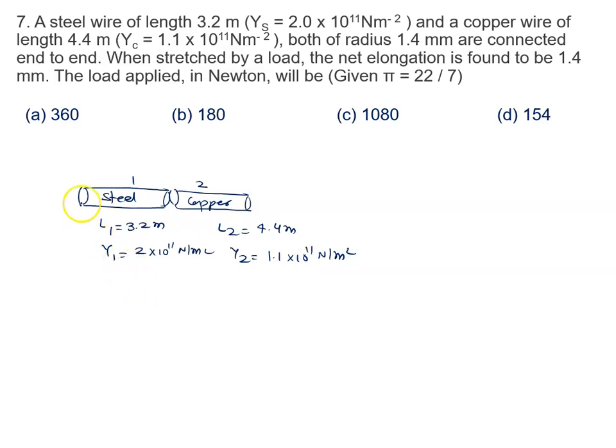Both of radius 1.4 millimeter. Radius of this is also same, and this is also same. So I say A1 equal to A2. It is given by pi R square. R square means 1.4 into 10 raised to power minus 3 whole square.